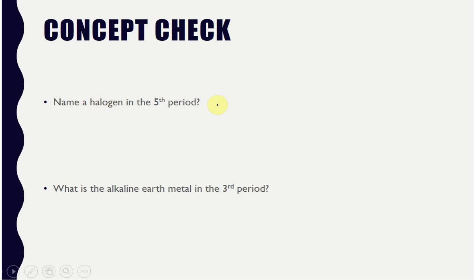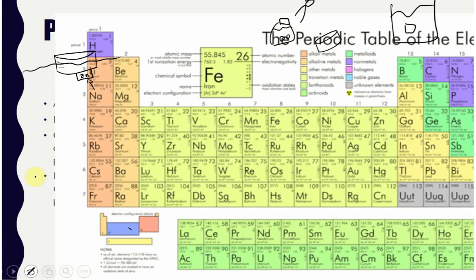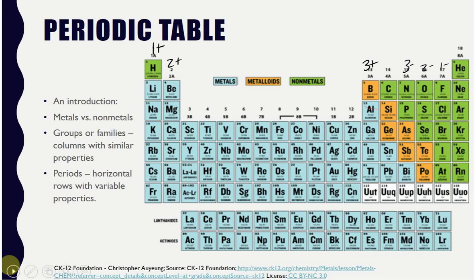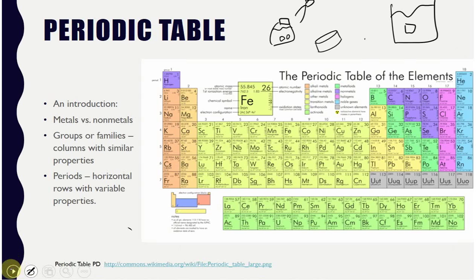So here's what a question could look like: name a halogen in the fifth period. Well halogen means this is group seven. Period means we're going to count down five rows. One, two, three, four, five. I'm going to count down five periods and I'm going to go over to group seven and I see iodine.